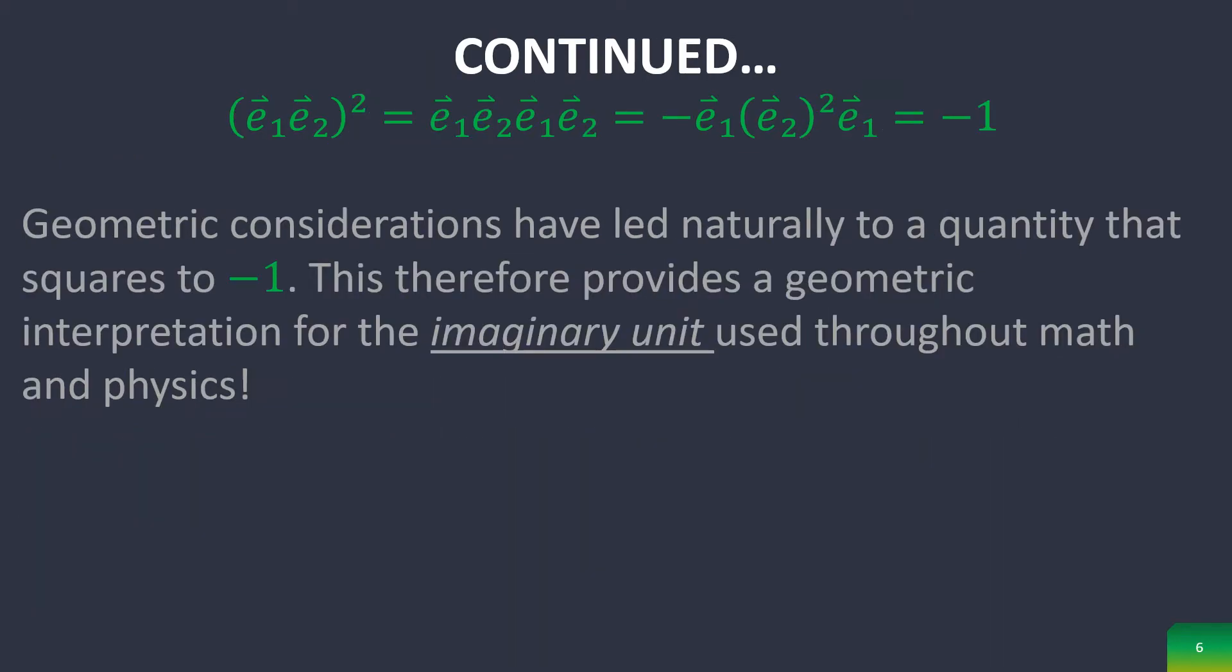It's very easy to prove that a bivector squared in planar geometric algebra is equal to negative 1. Thus these geometric considerations have naturally led to a quantity that squares to negative 1. This provides an excellent geometric interpretation for the imaginary unit used throughout math and physics.